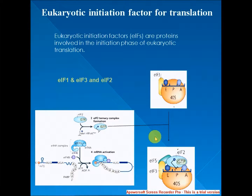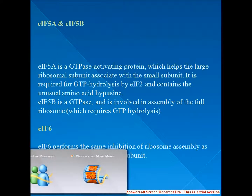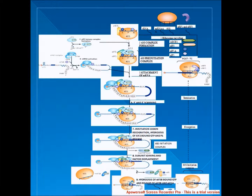EIF5A is a GTPase-activating protein which helps the large ribosomal subunit associate with the small subunit. It is required for GTP hydrolysis by EIF2 and contains the unusual amino acid hypusine. EIF5B is a GTPase involved in assembly of the full ribosome, which requires GTP hydrolysis. EIF6 performs a similar role in ribosome assembly but binds with the large subunit.